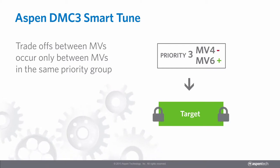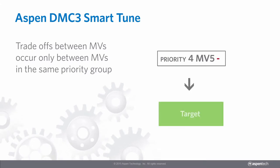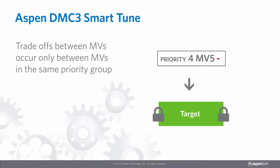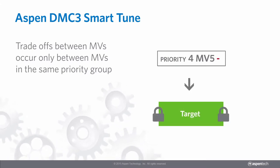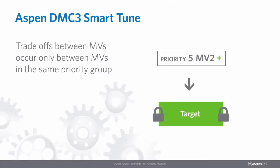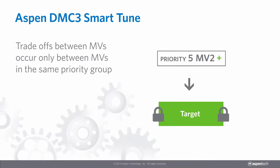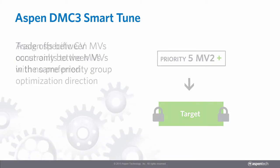The advantage of SmartTune is that irrespective of the LP costs, MVs in lower priority groups do not trade off with higher priority MVs. Trade-off occurs only between MVs that are in the same priority group and is based on the LP costs and shared constraints.